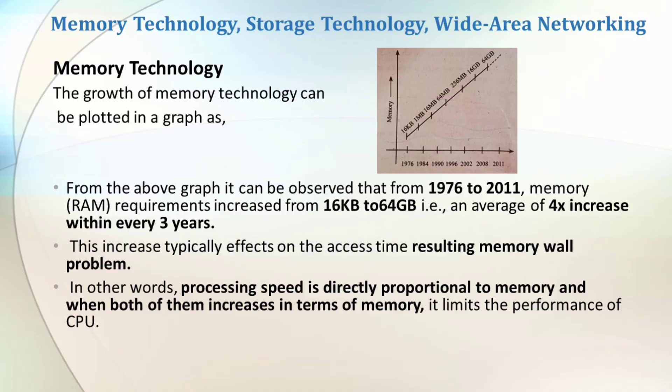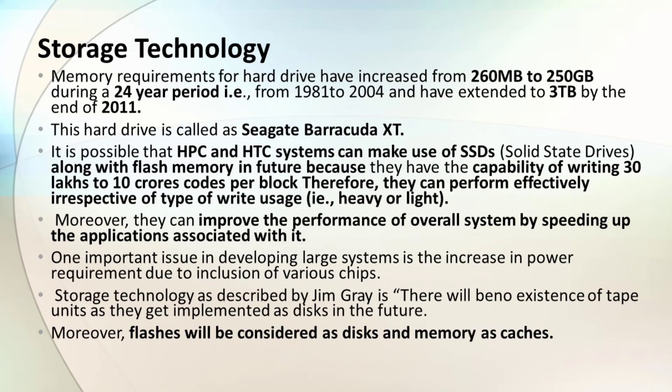Regarding memory technology, looking at the growth graph, memory has grown from 16 KB to 64 GB, meaning a 4-times increase every 3 years. However, this increase has typical effects on access time, resulting in a memory bottleneck problem. For storage technology, memory requirements for hard drives have increased from 260 MB to 250 GB from 1981 to 2004, and have extended to 3 TB by the end of 2011.